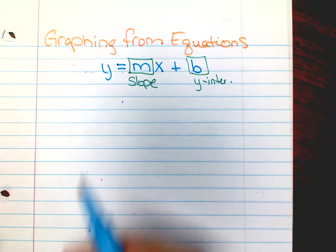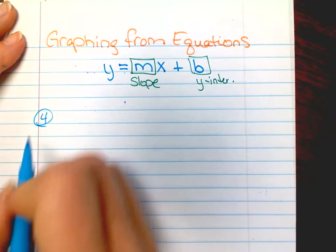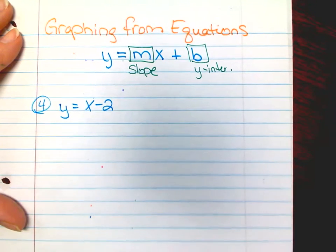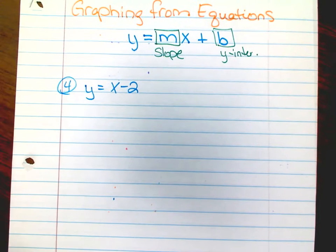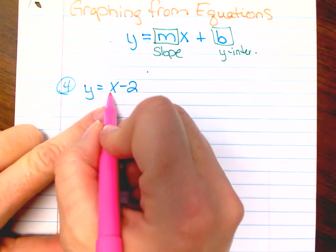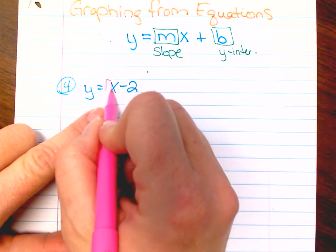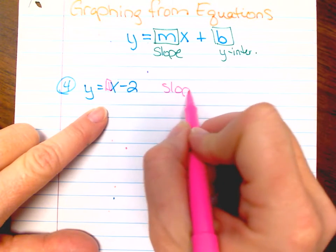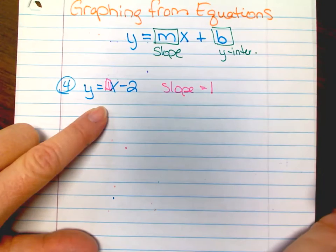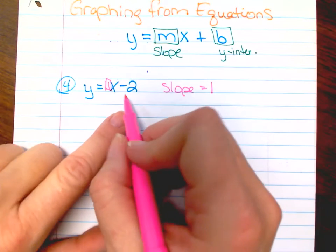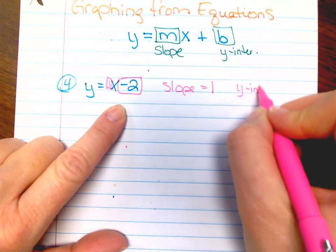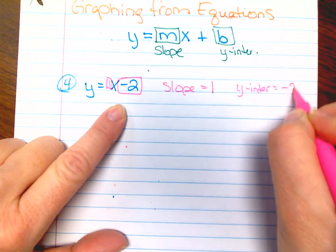Okay, on your homework it was number four. Let's look at our formula: y equals x minus two. From just looking at our formula, I can tell you it's understood that there is an imaginary one here — one x. So my slope equals one, and my y-intercept equals negative two.